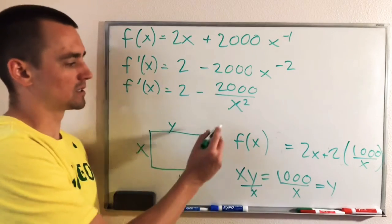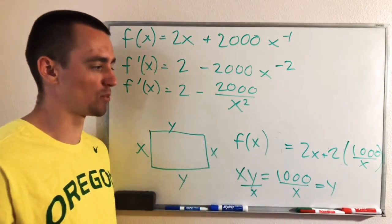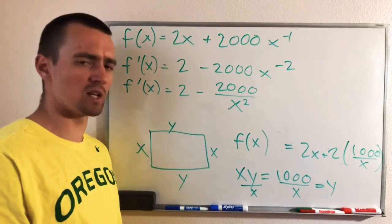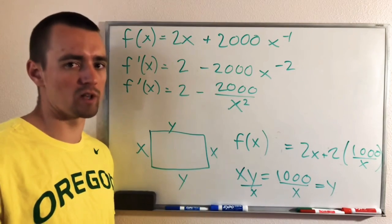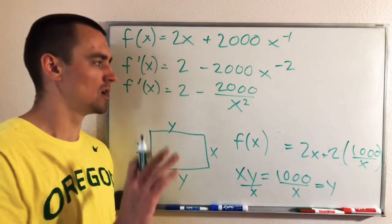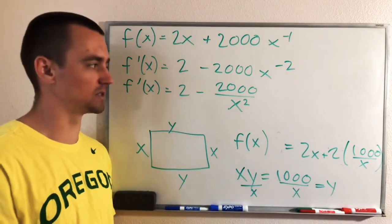So in the context of this problem, thinking about what our function actually represents, X being 0 doesn't even make sense. So we can pretty much ignore that critical number because it won't make a rectangle if X is 0.